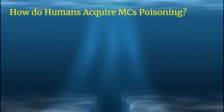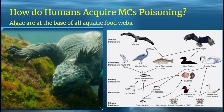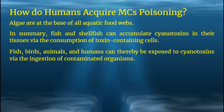How do humans acquire microcystin poisoning from the pathogen cyanobacteria? Algae are the base of all aquatic food webs. Fish and shellfish can accumulate cyanotoxins in their tissues via consumption of toxin-containing cells. Fish, birds, animals, and humans can thereby be exposed to cyanotoxins by ingestion of such contaminated organisms — essentially, big fish eat small fish, birds eat the fish, animals do too, and then we eat birds, animals, and fish. These events are also responsible for reduced dissolved oxygen and bad taste and odor in drinking and recreational water.